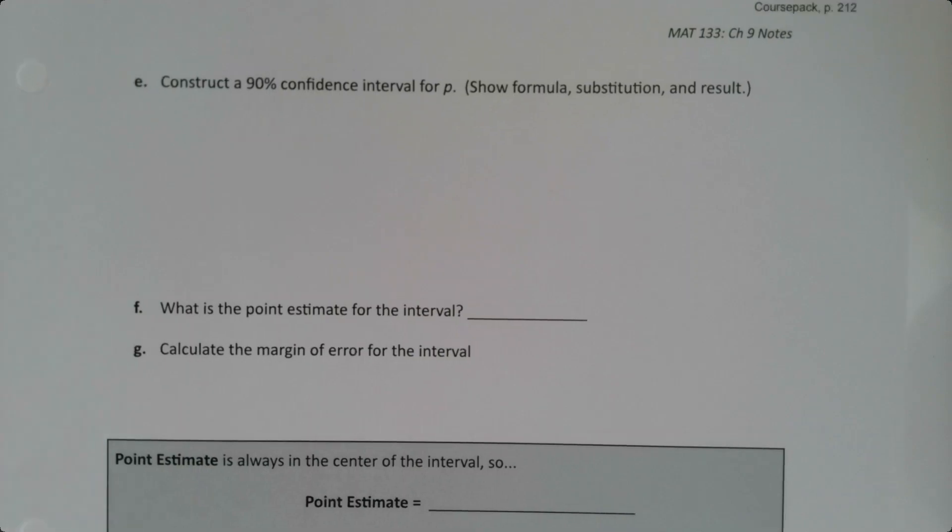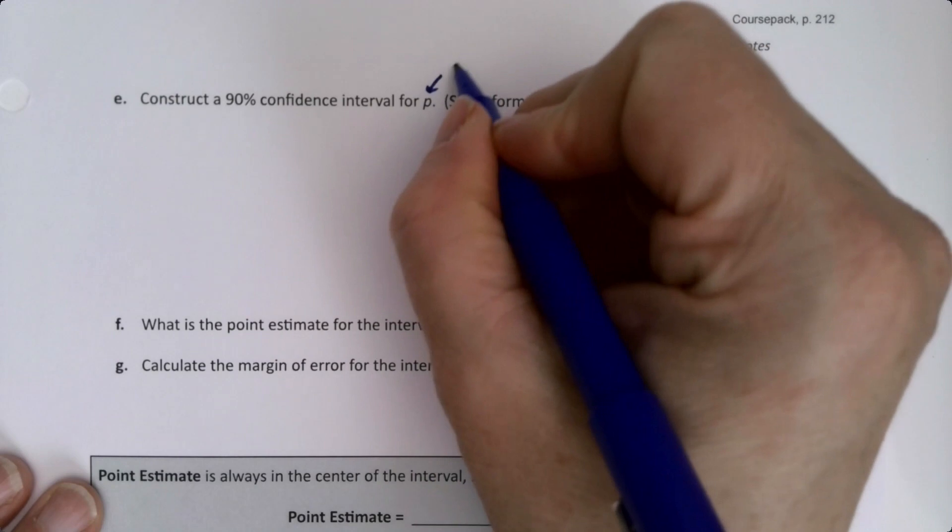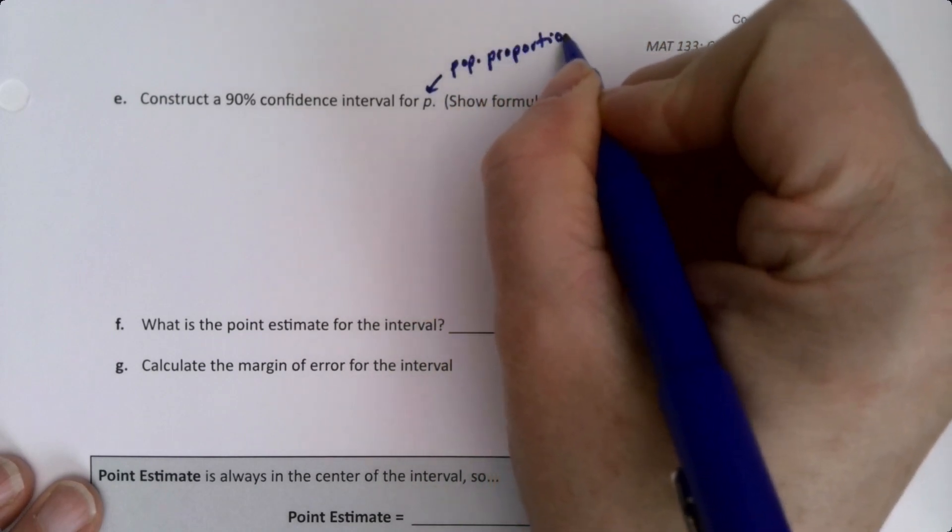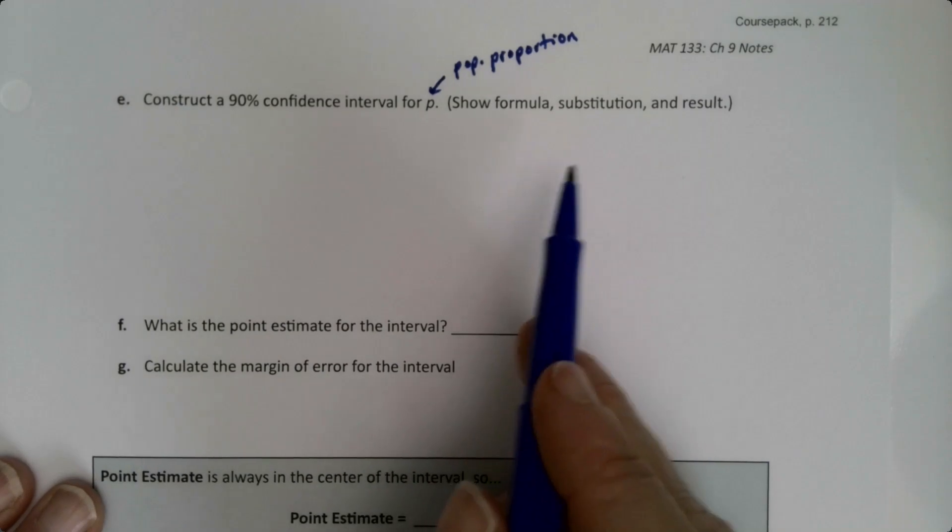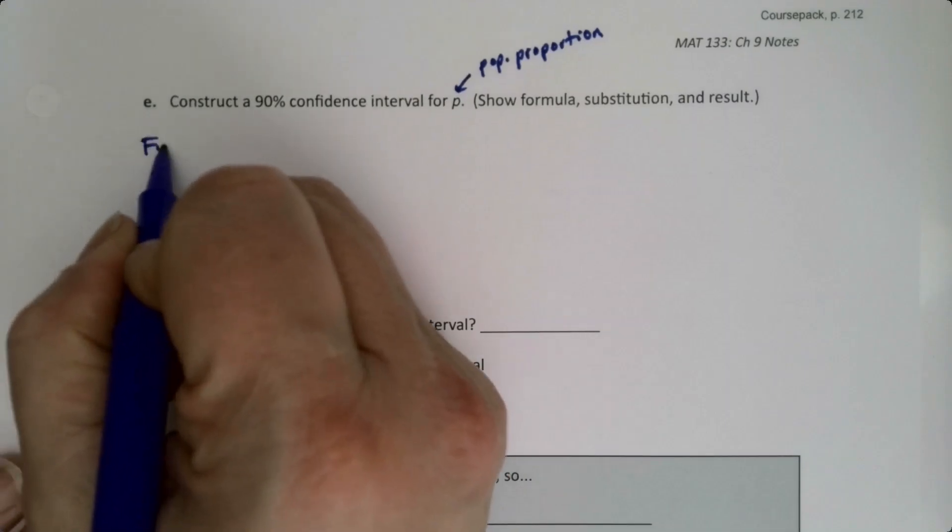So now continuing with the same problem, we want to be able to construct a 90% confidence interval for P, the proportion. So that's what P stands for, population proportion. We're going to show the formula, substitution, and results.